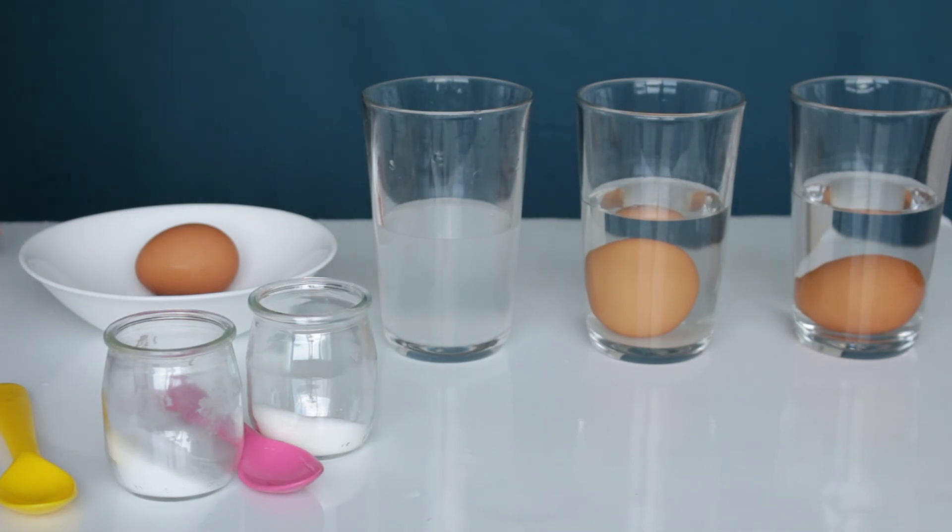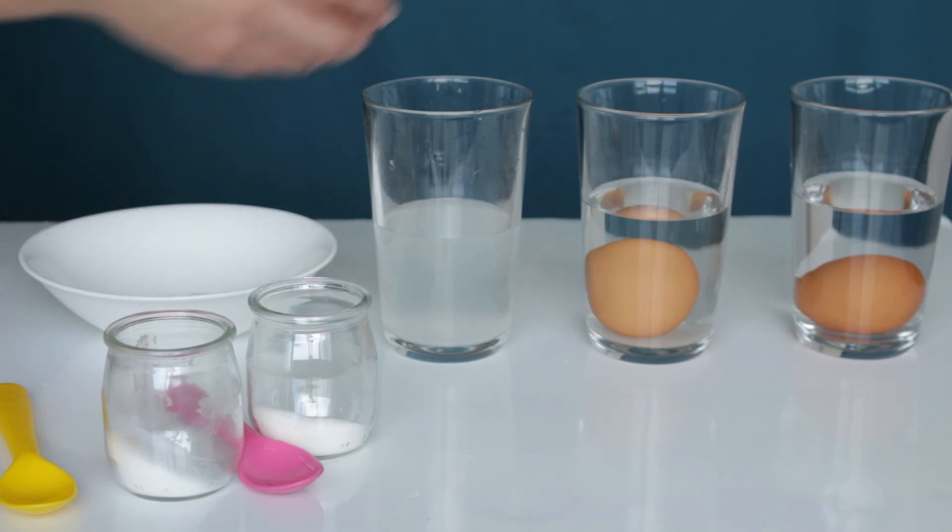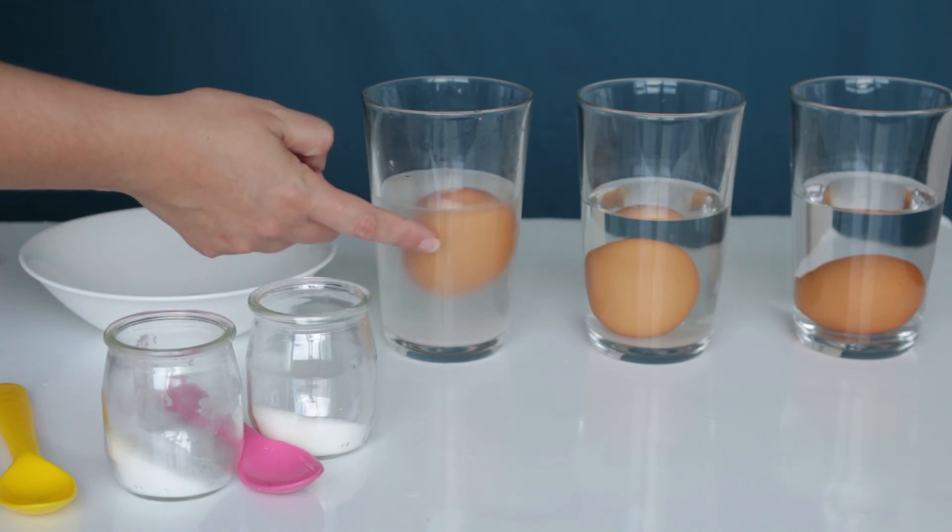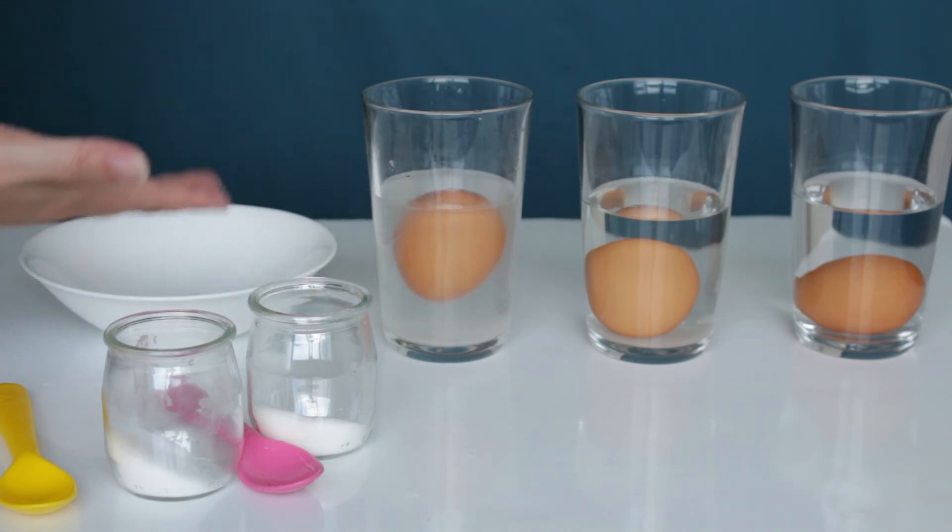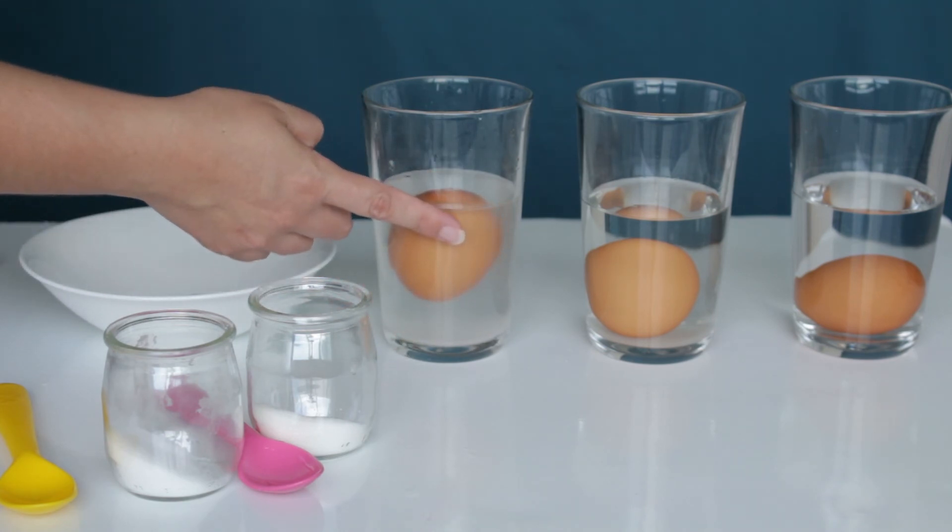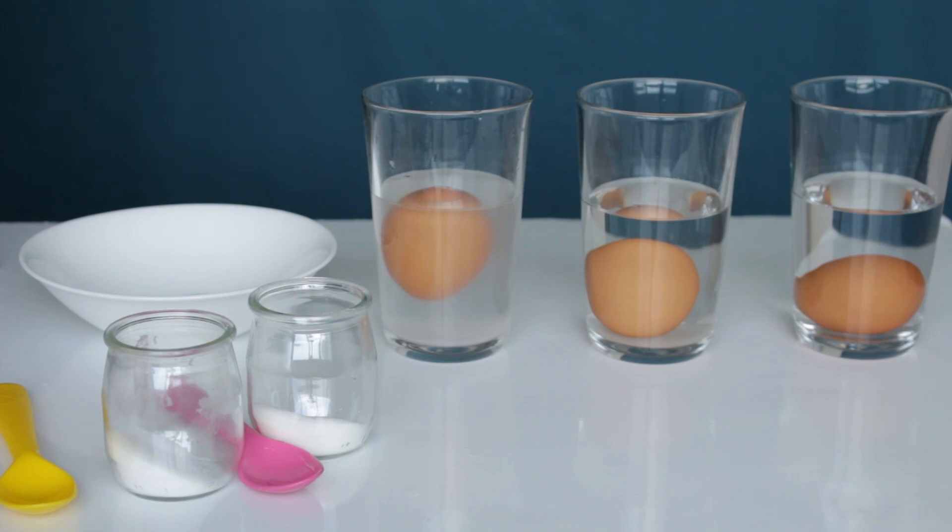Now what about the water and salt? What's going to happen? Let's see. Wow, what's going to happen here? The egg is floating. Why? Because the water with salt is more dense than the egg, so the egg will float because the egg is less dense than the water with salt.